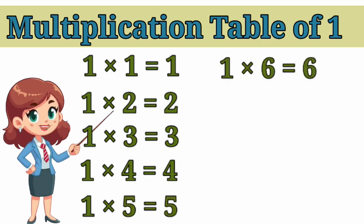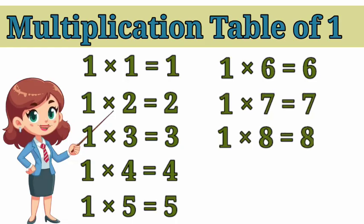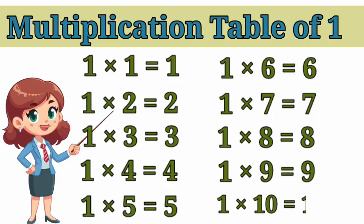One sixes are six. One sevens are seven. One eights are eight. One nines are nine. And one tens are ten.